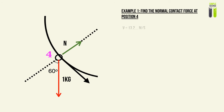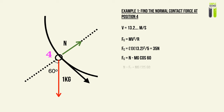With v = 13.2 m/s, the centripetal force is mv²/r, which gives 35 N. Resolving radially, the centripetal force equals n − mg cos θ. Rearranging to find n and plugging in the values gives n = 40 N. Take your time to try the calculations yourself to check your understanding.